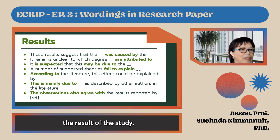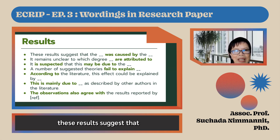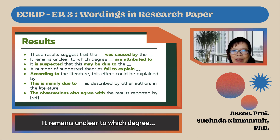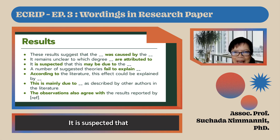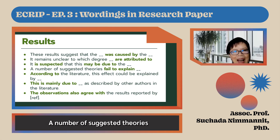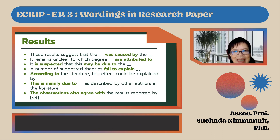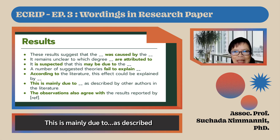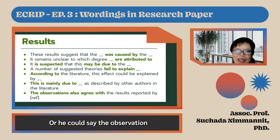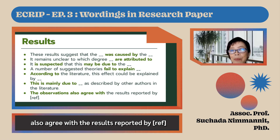The researcher will then explain the results of the study. Useful expressions include: 'These results suggest that…', 'It remains unclear to which degree this is attributed to…', 'It is suspected that this may be due to…', or 'A number of suggested theories failed to explain…'. According to the literature, 'this effect could be explained by…', 'this is mainly due to…', or 'as described by other authors in the literature.' He could also say: 'The observation also agrees with the results reported by…'